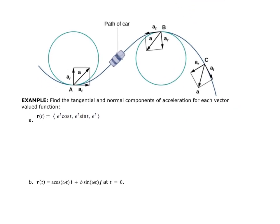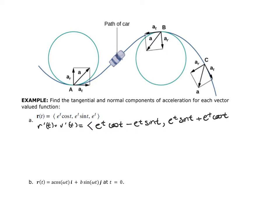Now let's find the tangential and normal components of acceleration for a vector-valued function. We first find the first derivative r prime of t, the velocity. Using the product rule on the components, the first component is e^t cos t minus e^t sin t, the second component is e^t sin t plus e^t cos t, and the third component is e^t.